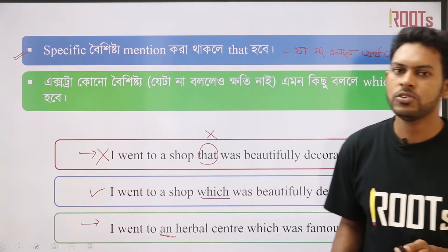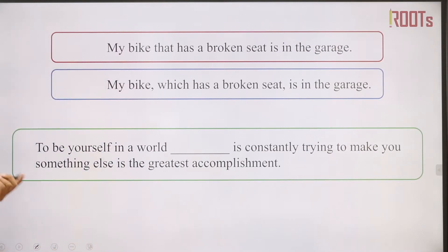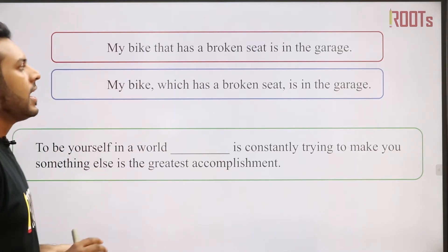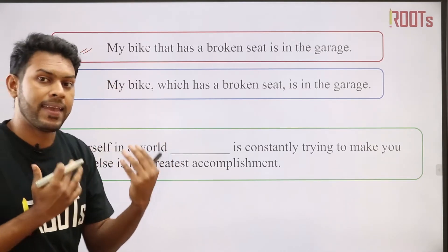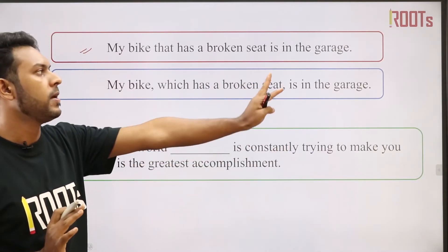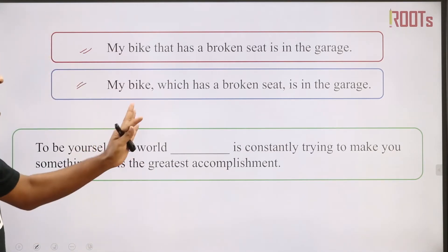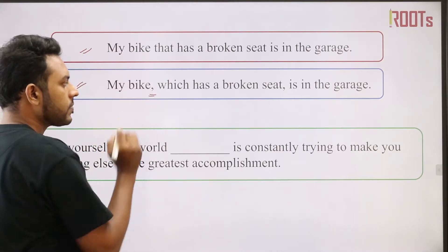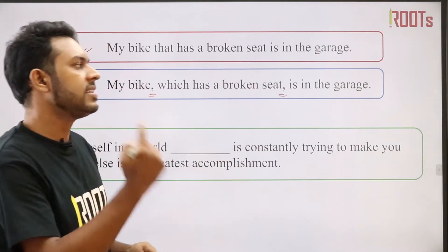Let's take a look at this example — that versus which. 'My bike that has a broken seat is in the garage.' And the second sentence: 'My bike, which has a broken seat, is in the garage.' These are two different sentences with different meanings.